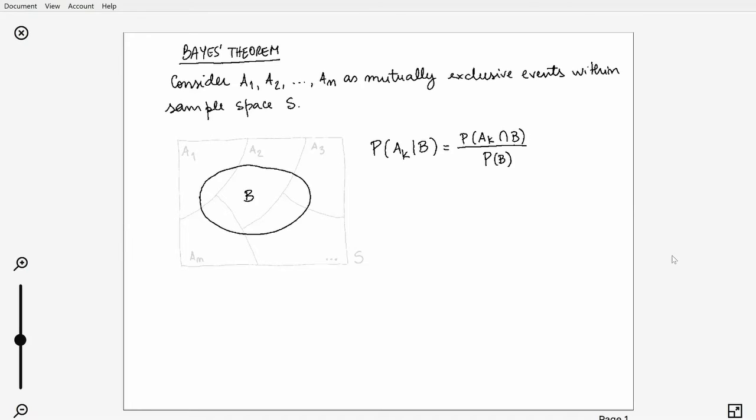And you can develop that ratio with the help of the theorem because you can divide the product of the probability of that Ak event by the conditional probability of B happening